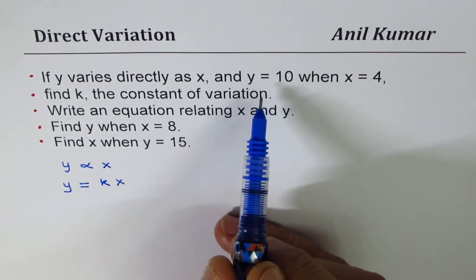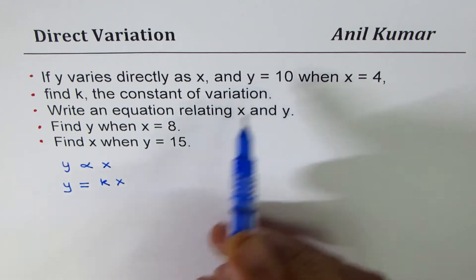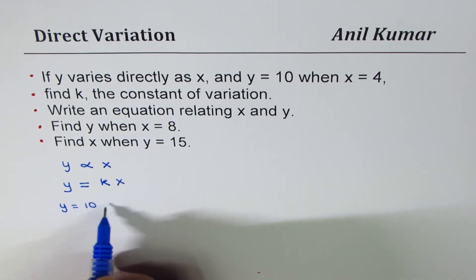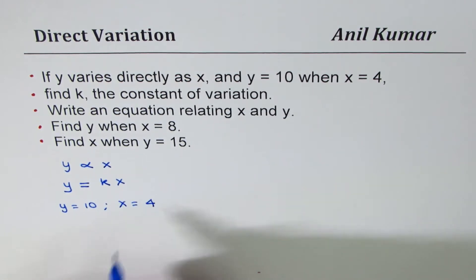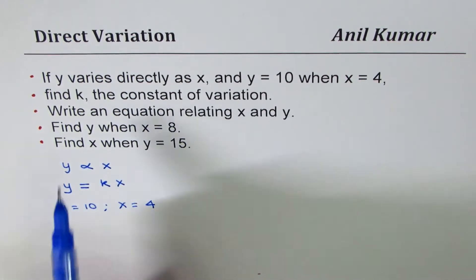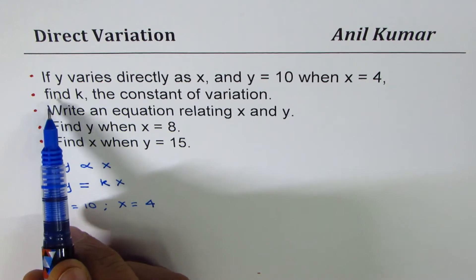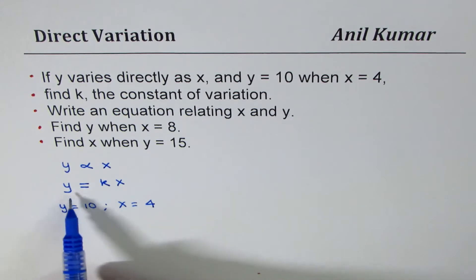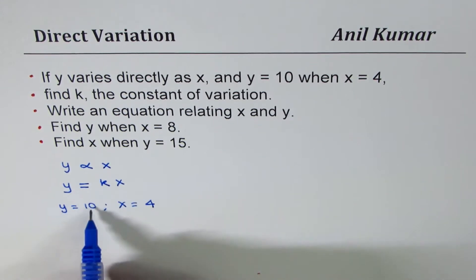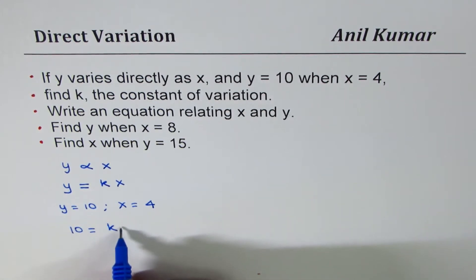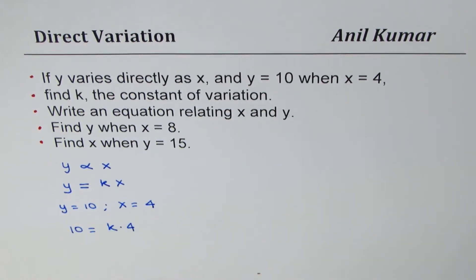In the given equation, we are given values of x and y. We are saying that y equals 10 when x equals 4. Given these values, we can calculate what k is from the above equation. That is the first part, which says find k, the constant of variation. So we will substitute these two values for y and x: y is 10, so we get 10 equals k times 4.